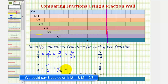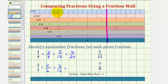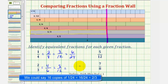Finally, we'll count or enumerate the one-twenty-fourth rods that would give us a length of two-thirds. It takes sixteen rods of length one-twenty-fourth to equal two-thirds, which means sixteen-twenty-fourths is equivalent to two-thirds.